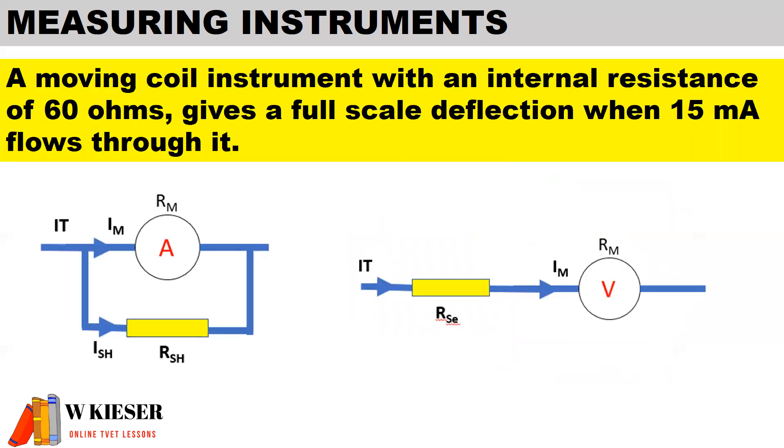And this brings us to the moving coil instrument calculation. A moving coil instrument with an internal resistance of 60 ohms gives a full scale deflection when 15 milliamps flows through it. These two illustrations are going to help us solve the unknown variables: the value of the shunt resistor and the value of the series resistor.